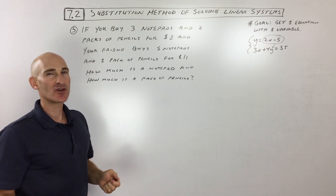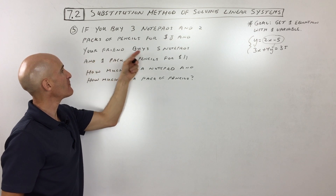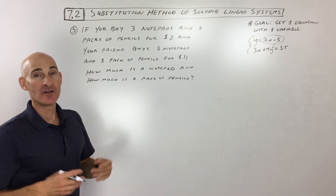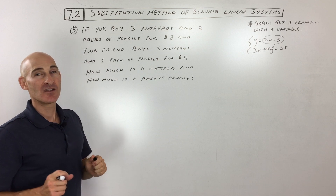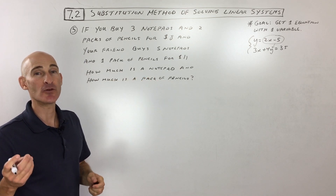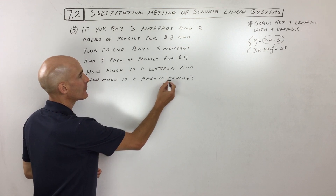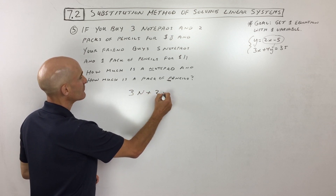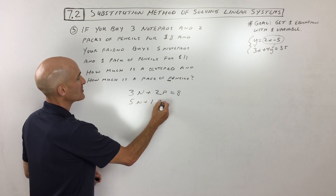Now for word problems — you really want to get good at these in algebra. If you buy 3 notepads and 2 packs of pencils for $8, and your friend buys 5 notepads and 1 pack of pencils for $11, how much is a notepad and how much is a pack of pencils? We've got to define our variables first. Here's a nice technique: use that first letter — N for notepad, P for pencils. So you've got 3N plus 2P equals $8, and 5N plus 1P equals $11.